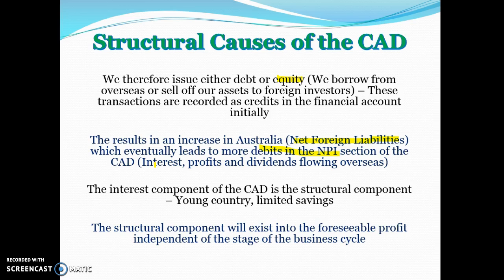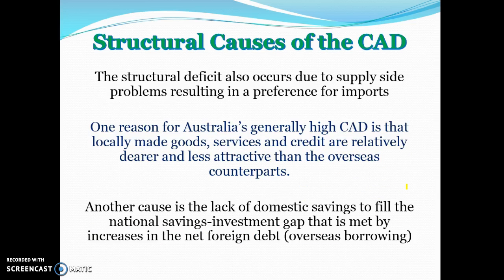To summarise, Australia's structural CAD is related to net primary income. The fact that we are a developing nation with a lot of debt — because we need that debt to grow — means the interest component of the CAD is the structural component. This structural component will continue to exist regardless of where we are in the business cycle.